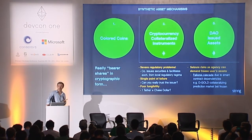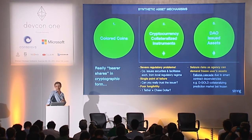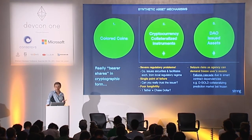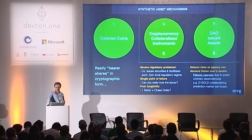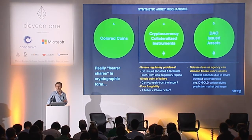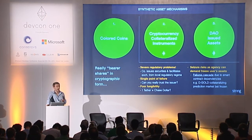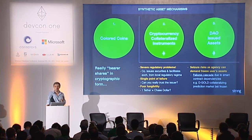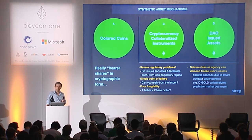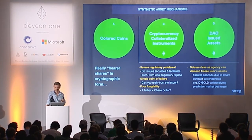Returning to synthetic assets: to create autonomous finance, how do we create these synthetic assets? There are three main mechanisms. The first is colored coins. The second is cryptocurrency collateralized instruments. The third is DAO-issued assets.